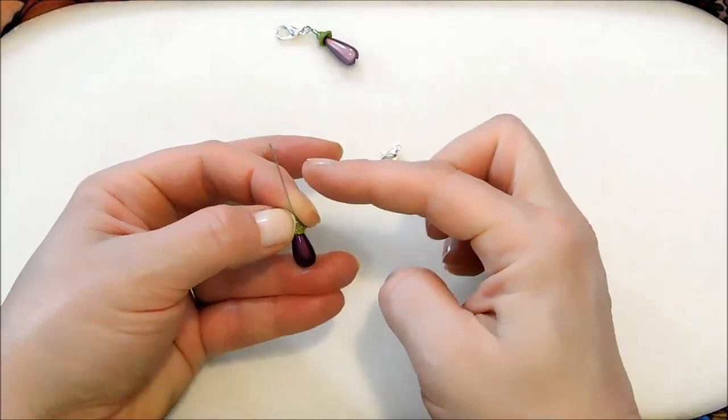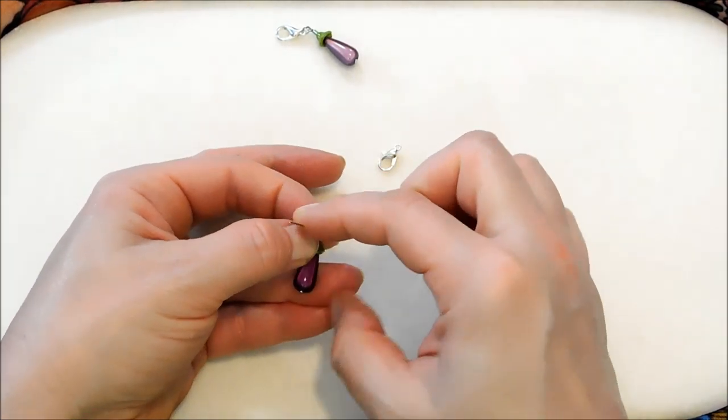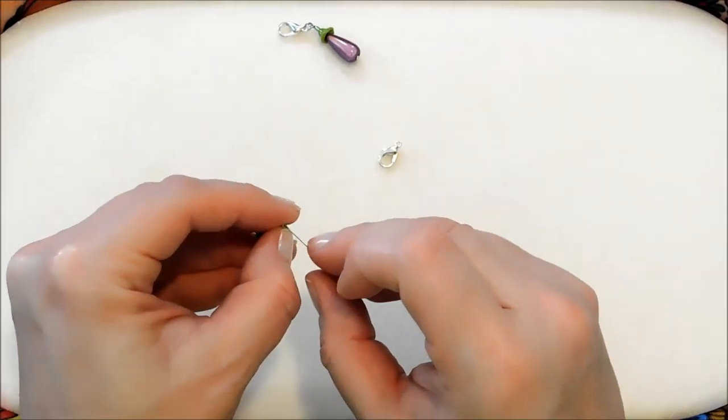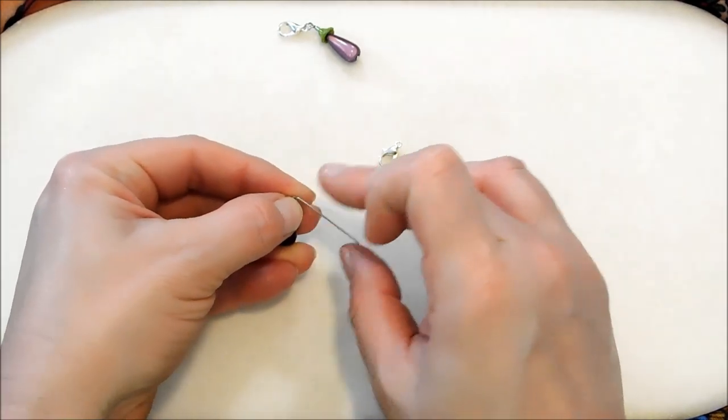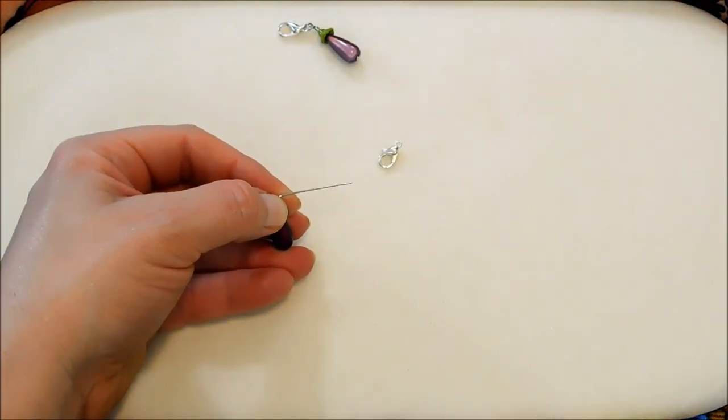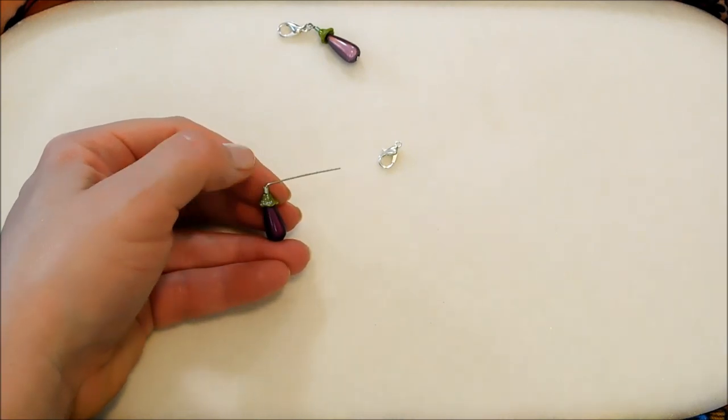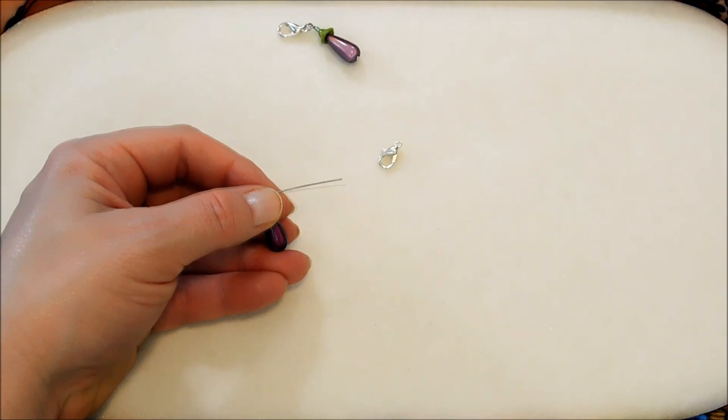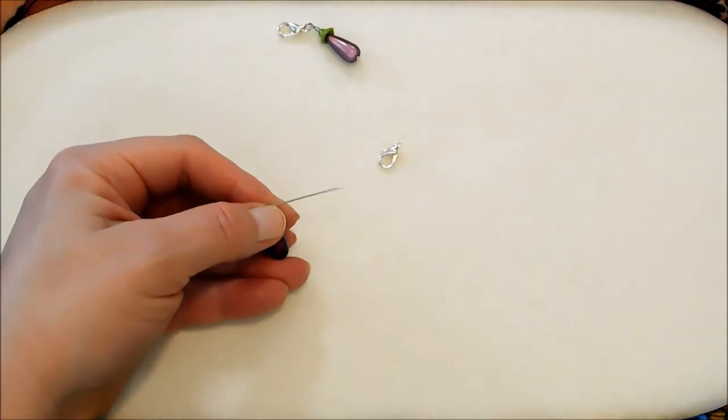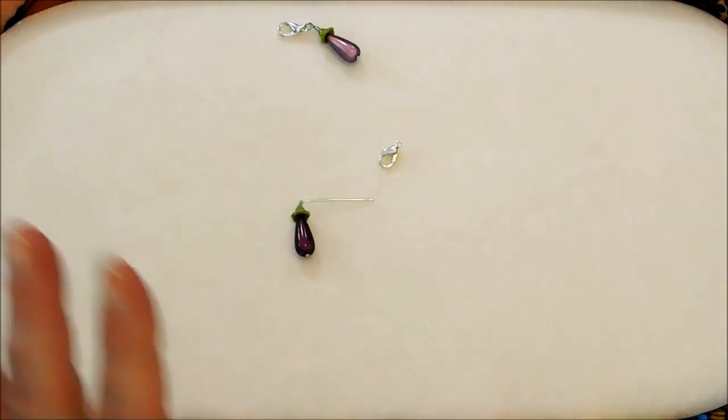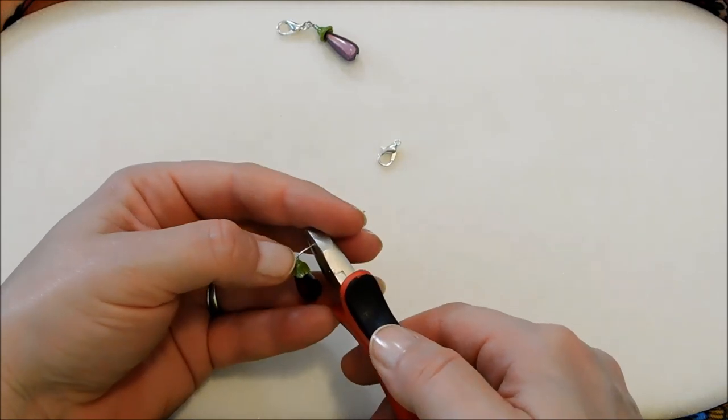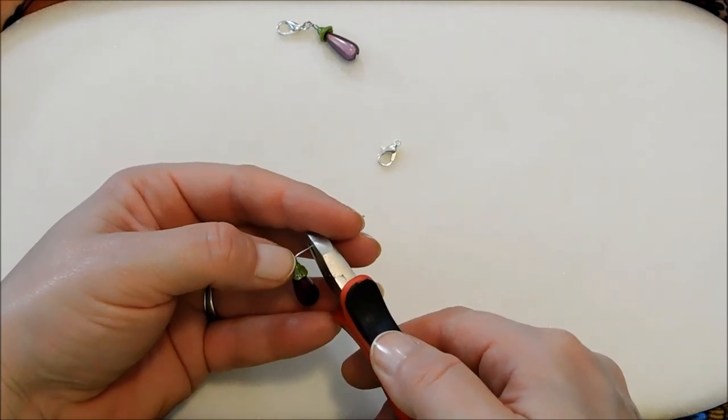And then I'm going to hold everything firmly down and bend my head pin over. I want to make sure not to bend my stem. Which you could bend the stem if you wanted to. You guys have seen me do that in a few different ones with fruits and vegetables. Kind of gives it a little more of a natural look sometimes. I did that with my little mushroom bead charms and I thought it was so cute. And then I'm going to cut that down to maybe just a little more than a quarter of an inch.